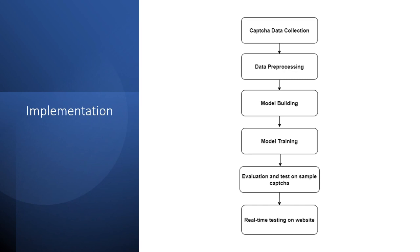Now let's take a look at the implementation of the attack. We start with acquiring the dataset containing CAPTCHA images. Then we process the data to suit the format to input in the neural network. Following this, we build the model and train it. Then we evaluate the results on a simple CAPTCHA image. Finally, we test the model on a real-time website.